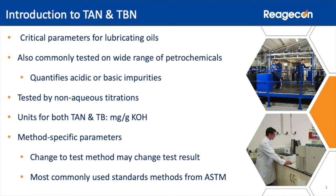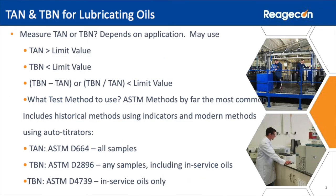There are a number of specified methods and a change in method may result in a change of test result. The most commonly used methods are those specified by ASTM. TAN may be important and the oil may warrant changing if its levels are greater than the limit value, or TBN is lower than the limit value, or the difference or ratio between the two values is below an established limit value.